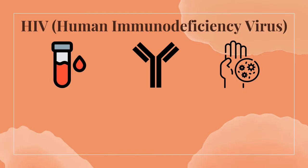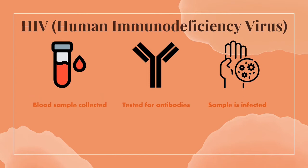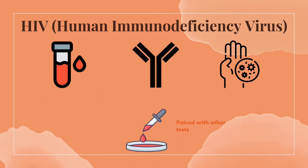The Western blot is often used to confirm an HIV diagnosis. A blood sample is taken and tested for HIV antibodies. The Western blot is great at identifying antibodies, and if there are any present, it confirms the presence of an HIV infection. Otherwise, the body would not need to make any. While the Western blot is good at detecting the infection, it is often paired with other tests because it does not give all the information necessary.